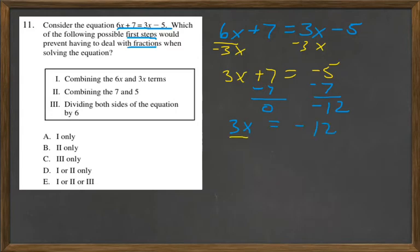Then we divide by 3, divide by 3, and we have x = -4. So at no time do we have any fractions there.